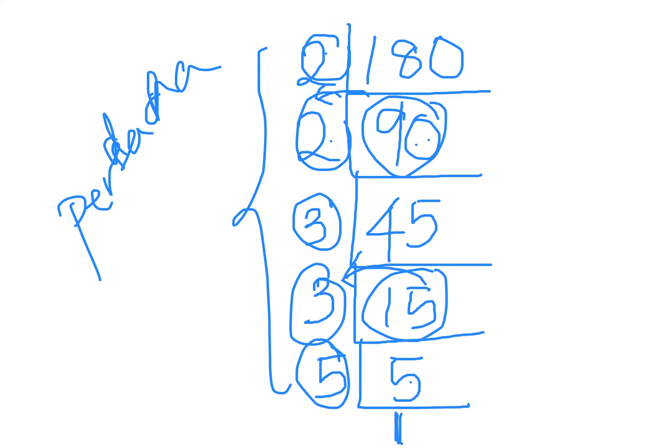Kalau you buat ni — 2 darab 2, lepas tu darab 3, darab 3, darab 5 — you're supposed to get 180. Kalau you tekan calculator: 2 darab 2 darab 3 darab 3 darab 5, dapat 180. Betul tak? Did you get the same answer? Clear? Yes, this is how we actually do it. Got it? I'll see you next time.